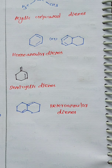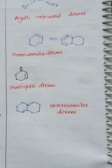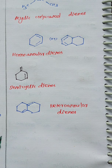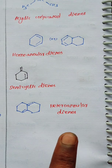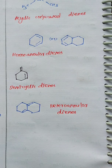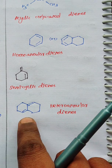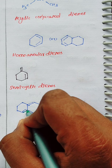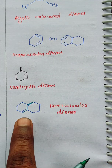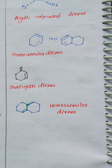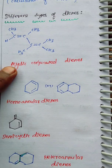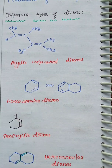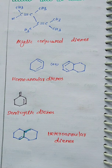The fourth type is Heteroannular Dienes. In Heteroannular dienes, both double bonds are present in different rings — they are in alternating double bond, single bond, double bond arrangement but located in different rings. So we now have four types: Acyclic Conjugated Diene system, Homoannular Diene system, Semicyclic Diene system, and Heteroannular Diene system.